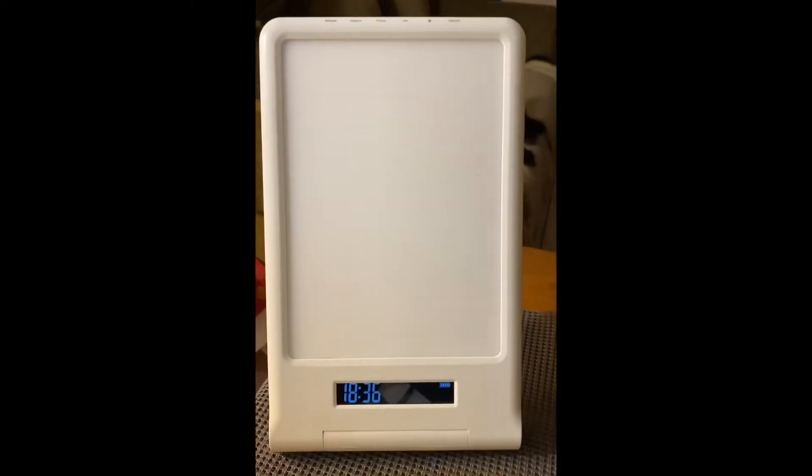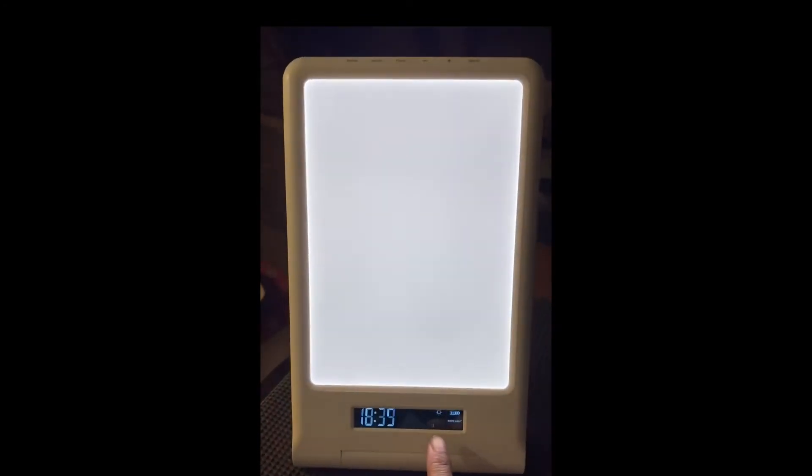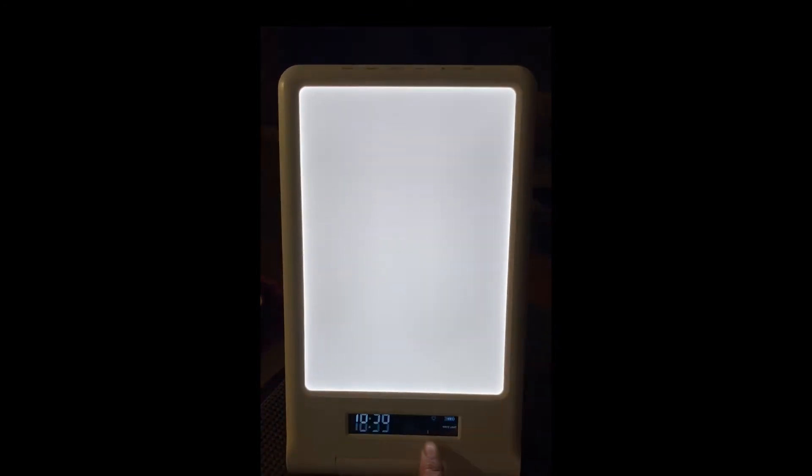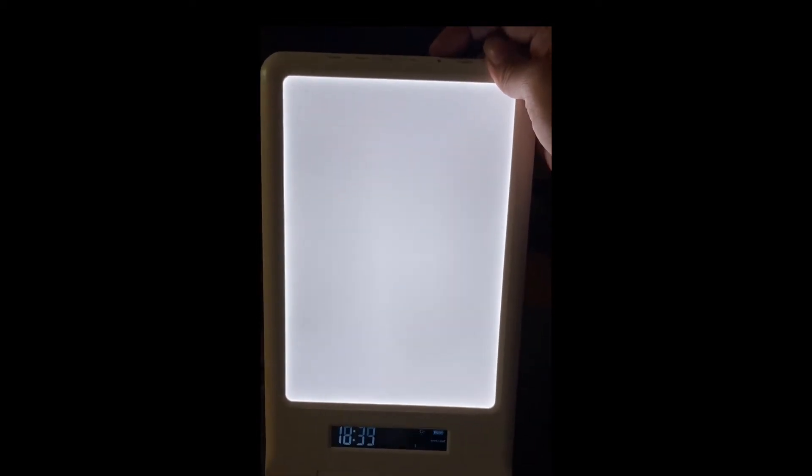So let's go ahead and show you how it works. So to turn it on, obviously here's the on button. Pretty simple. Now when I turn it on, it is at level one of the intensity. You can always see it right here and it goes up to 10 different levels of brightness.